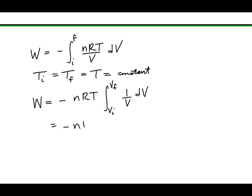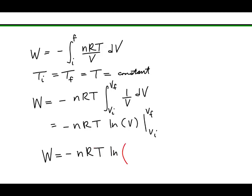Our calculus classes have taught us that this integral will evaluate to minus nRT times the natural log of the volume, evaluated from the initial volume to the final volume. Applying the limits of integration leads us to: the work done isothermally on the gas by its environment equals the negative of the number of moles times the gas constant times the temperature times the natural log of the ratio of the final to the initial volumes.